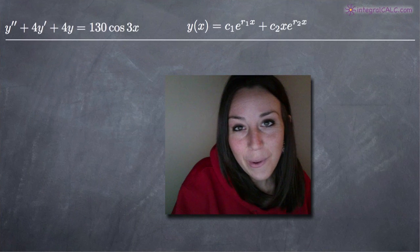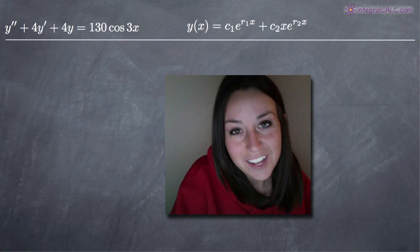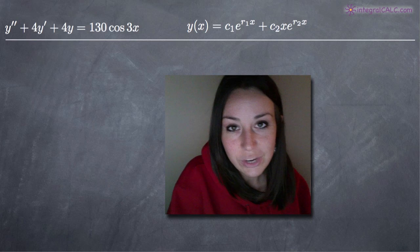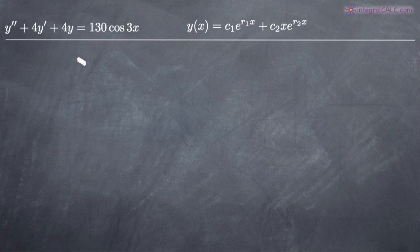Hi everyone! Welcome back to integralcalc.com. Today we're going to be doing another second order non-homogeneous differential equations problem. In this particular problem, we've been given the equation y double prime plus 4y prime plus 4y equals 130 cosine of 3x.